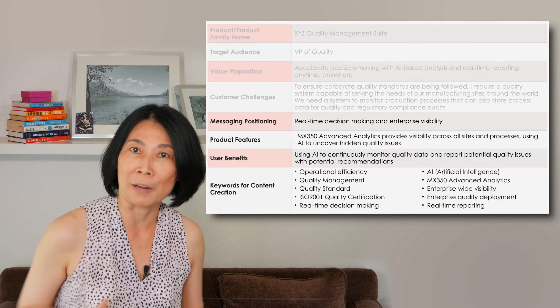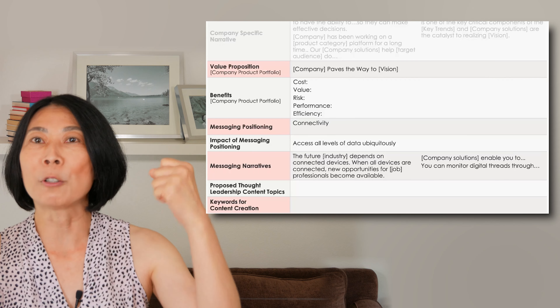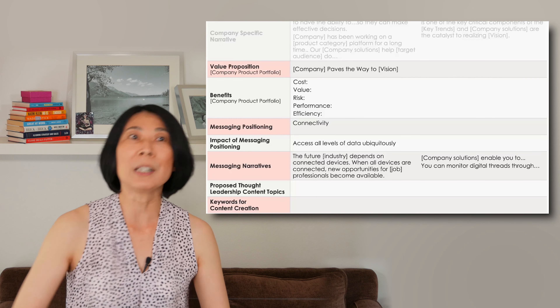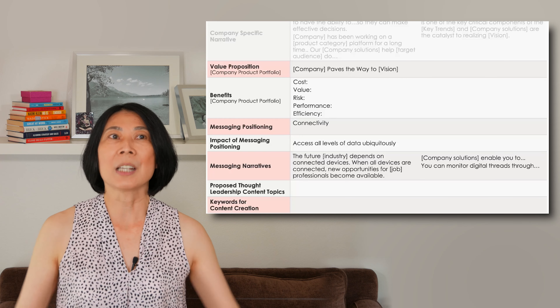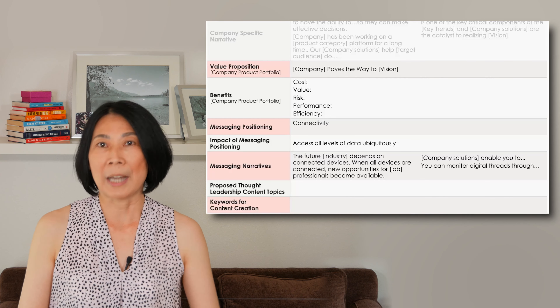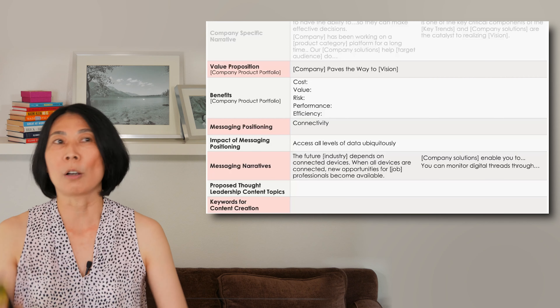Once you move on, you can talk about value proposition: 'The company paves the way to [what vision do you want to share]?' The benefits tend to fall in five categories: cost, value, risk, performance, and efficiency. Can you articulate your company's broader portfolio from these perspectives — efforts that decrease cost, increase value, minimize risk, enhance performance, and enhance efficiency?